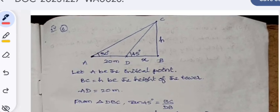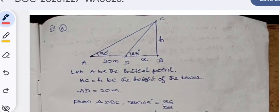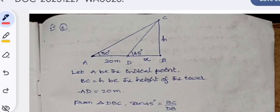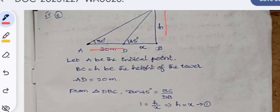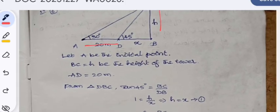For the sixth problem, this is given for 8 marks from applications of trigonometry - heights and distances. Let A be the initial point, BC = h be the height of the tower. AD, it is given that 20 meters. From triangle DBC, tan 45° = BC/DB = h/x, which equals 1, that gives h = x. This is the first equation.